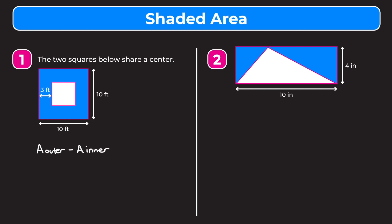In this problem our outer shape is this square that measures 10 by 10. I'm going to put that in pink, so the area of this pink square, and then for the area of the inner shape — that's also a square — I'll call it the area of the white square because it's the smaller white square.